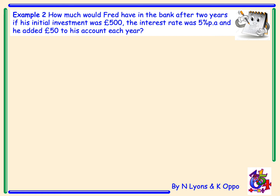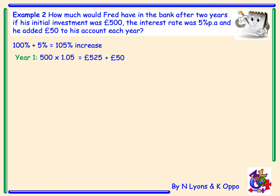Example 2. How much would Fred have in the bank after two years if his initial investment was £500, the interest rate was 5% per annum, and he added £50 to his account each year? We first need to state how much is in the bank after each year percentage-wise. We start with 100% and add on 5%, so there's 105% at the end of each year. For year one, we work out 500 times 1.05, then add on £50, so at the end of year one he has £575. For year two, it would be £575 times 1.05, giving £603.75, and then he adds £50, giving a total of £653.75.